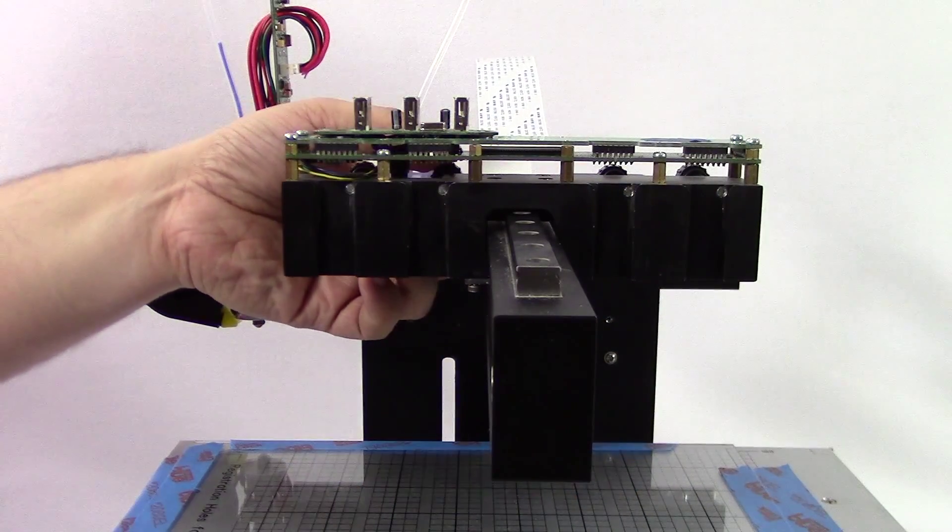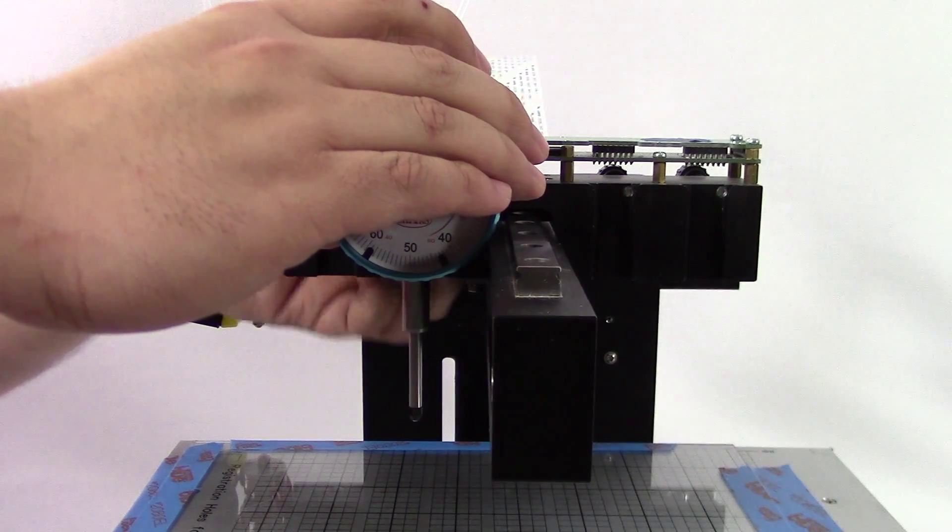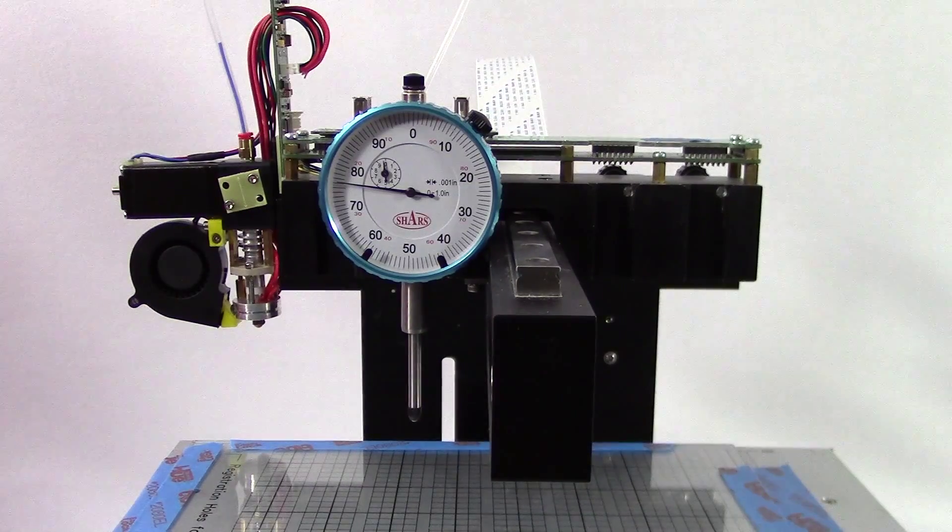Next, install the dial gauge into head position 2. Use the thumb screws in the rear to lock it into place. Make sure the dial gauge does not rest on the Y-arm.